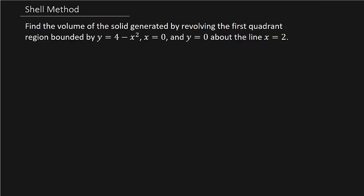It says: find the volume of the solid generated by revolving the first quadrant region bounded by y equals 4 minus x squared, x equals 0, and y equals 0 about the line x equals 2.